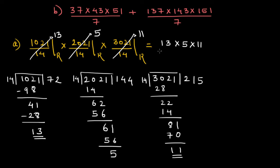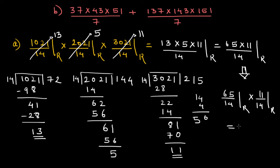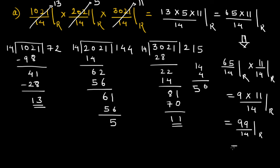So the answer equals the product of remainders: 13 times 5 times 11, all divided by 14. First, 13 times 5 is 65. Now applying the basic remainder theorem again: 65 divided by 14 gives remainder 9 — since 14 times 4 is 56, leaving 9. Then 9 times 11 is 99 divided by 14. Since 14 times 7 is 98, the remainder is 1. So the final remainder is 1.